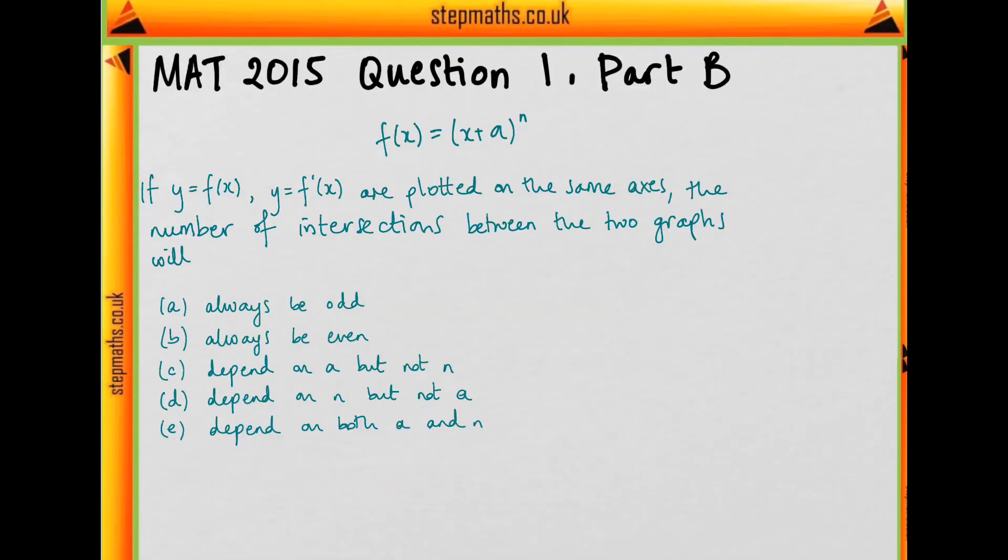Now the derivative of f, f dashed of x, is just going to be n times x plus a to the n minus 1. So basically we've got another polynomial, but the degree has been reduced by 1.